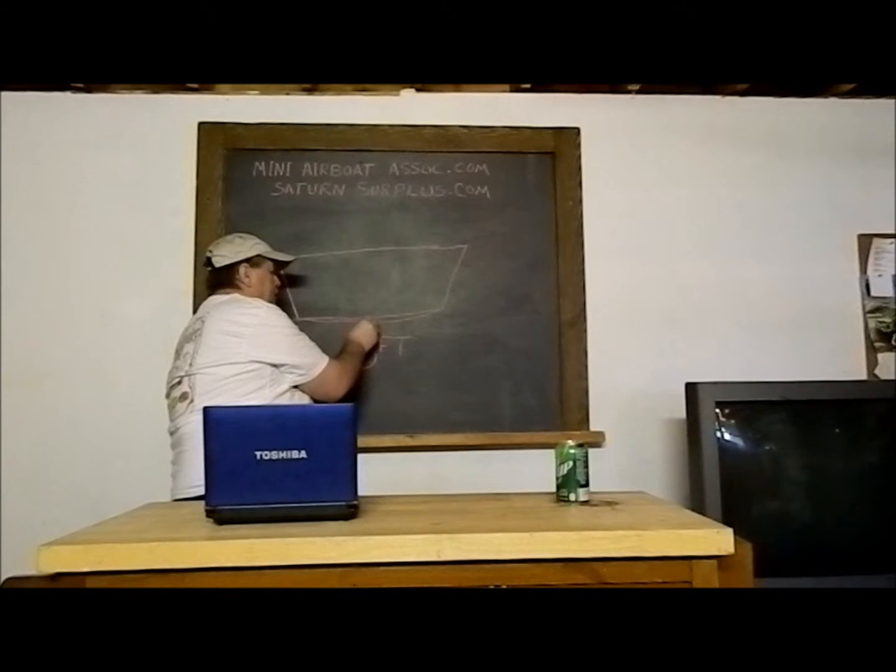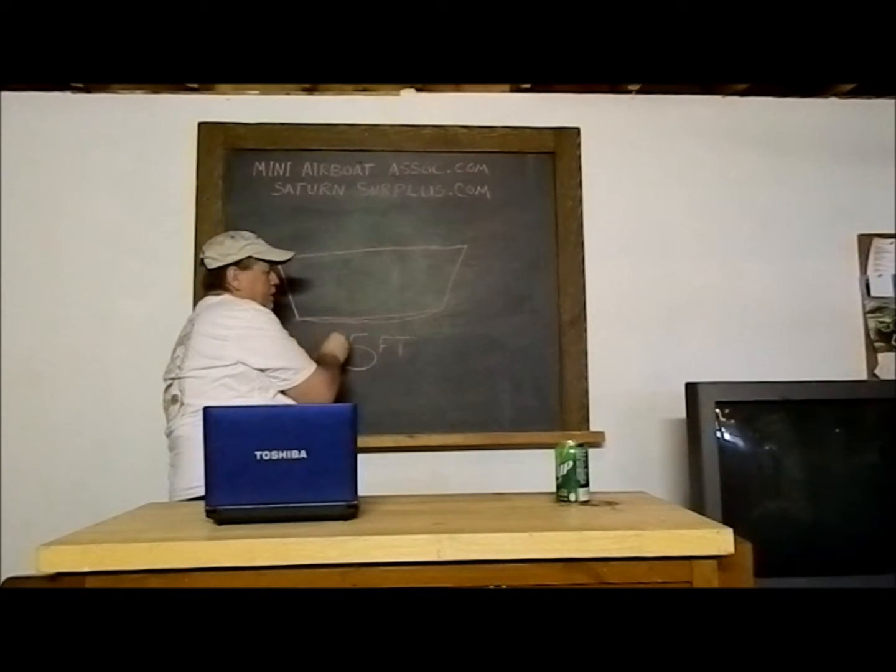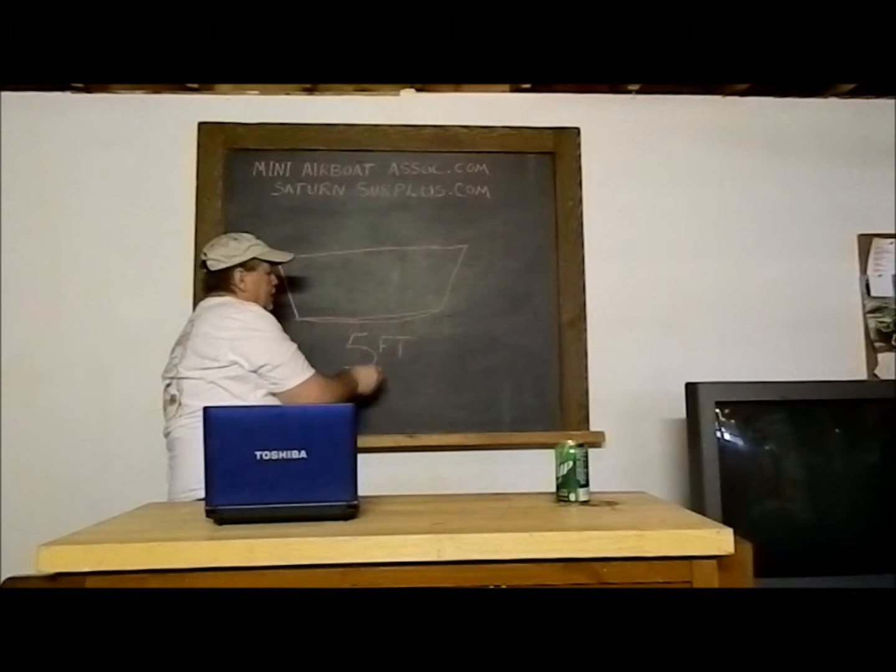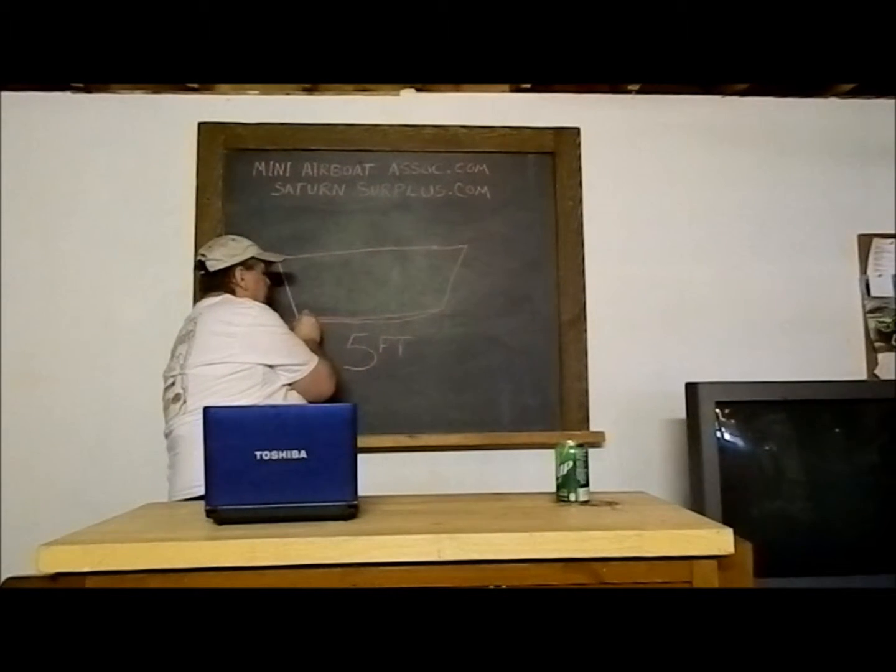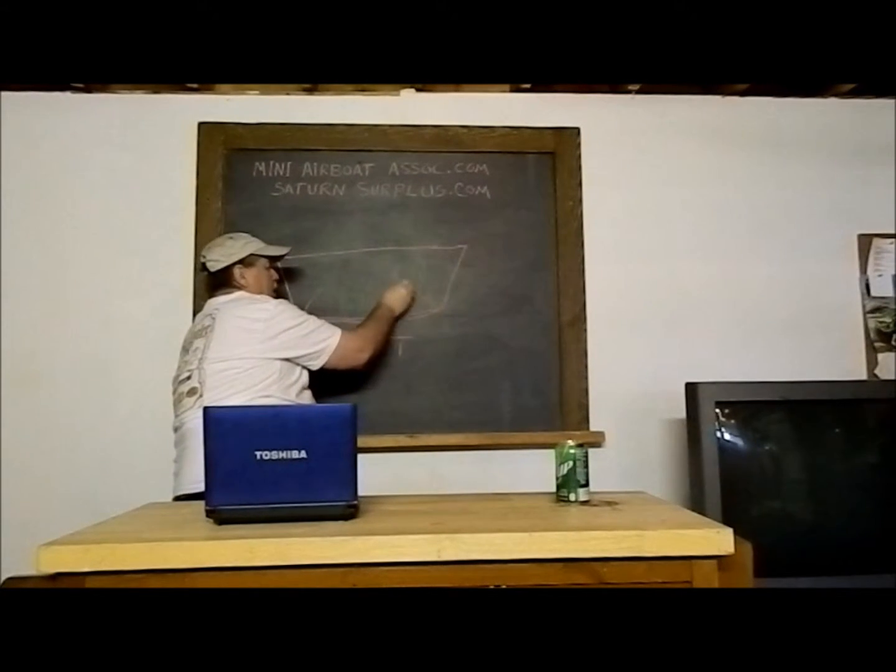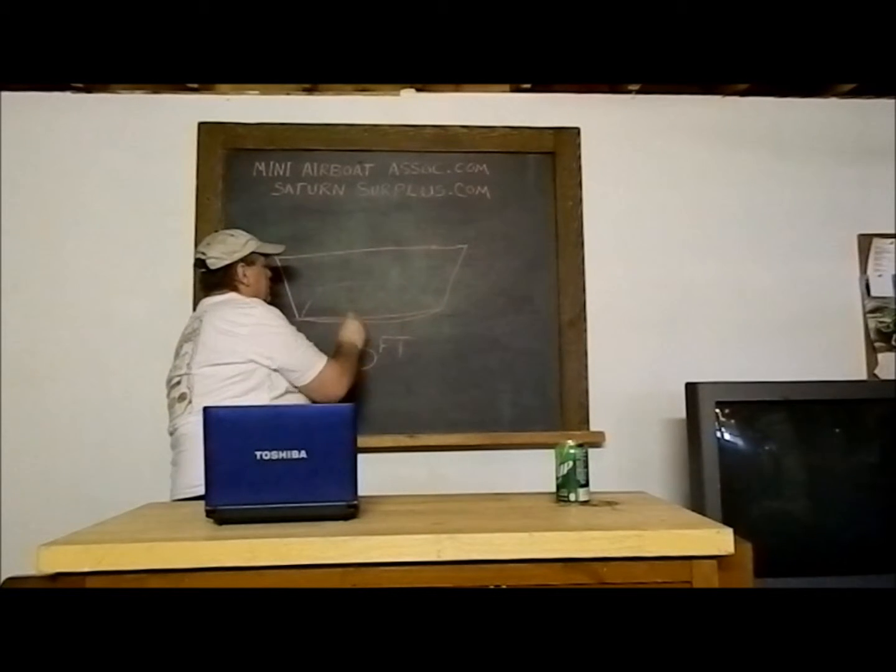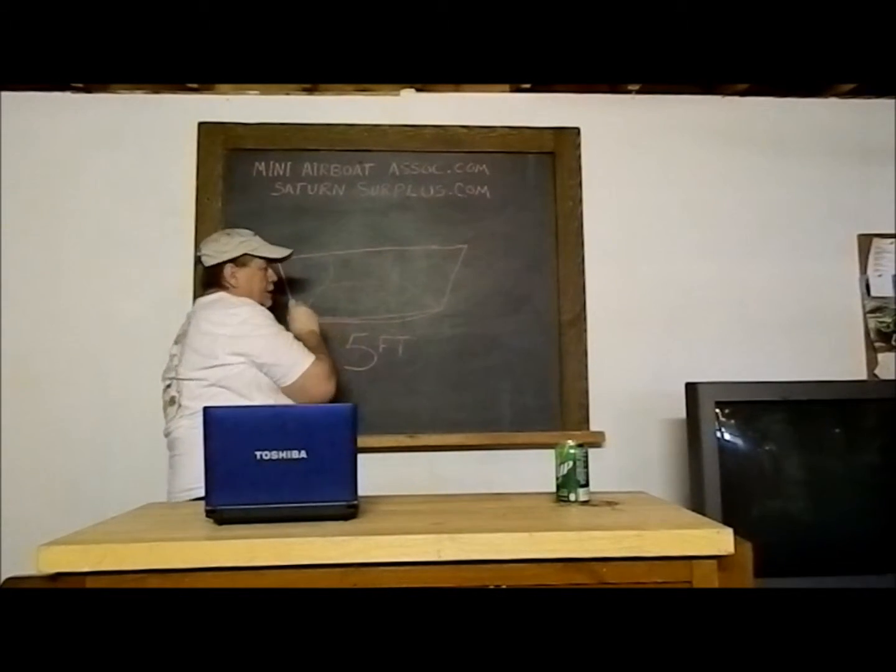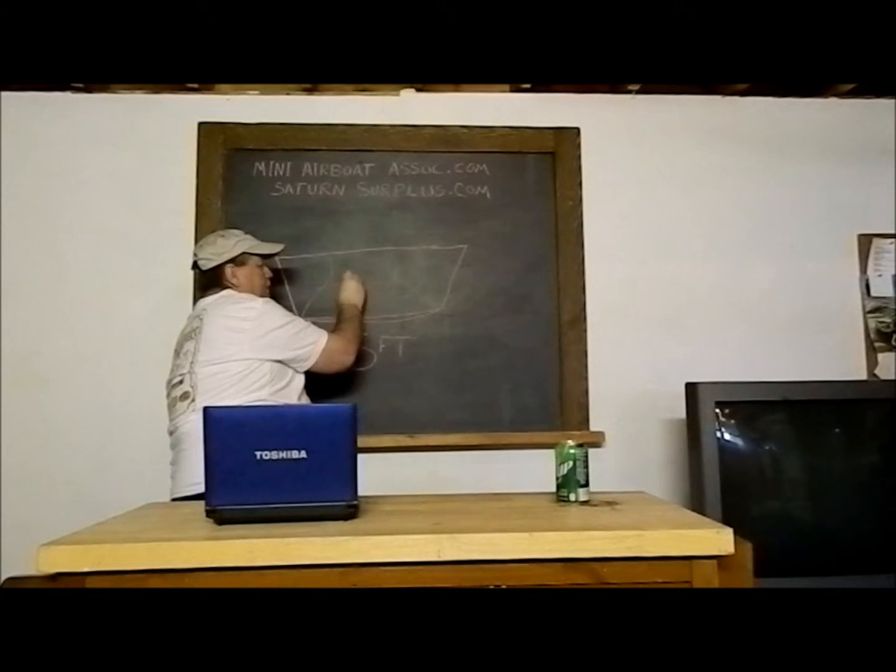As I said in the beginning of the video, this makes the bottom stronger and it also helps the boat track. Now this arc doesn't carry through the whole way to the front of the boat. The arc ends about a third of the way up in the boat and then it flattens out towards the front.